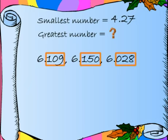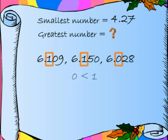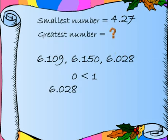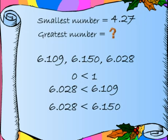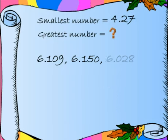Now we have 3 numbers with the same number of digits after the decimal point. What do we do now? Now we need to compare the tenths digits. So let's look at those digits: 1, 1, and 0. Now of course, 0 is smaller. This means that 6.028 is smaller than 6.109 and 6.150. Now we are left with 2 numbers.